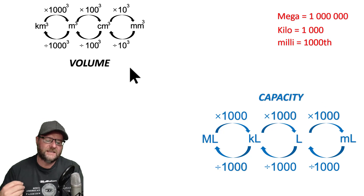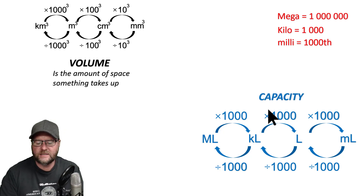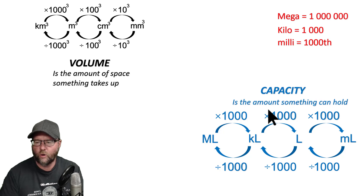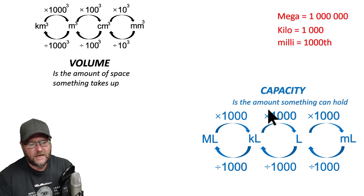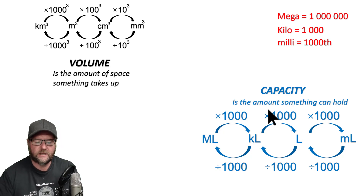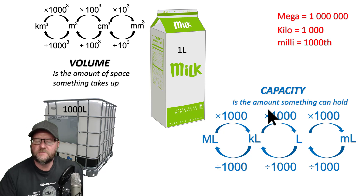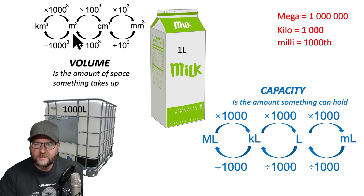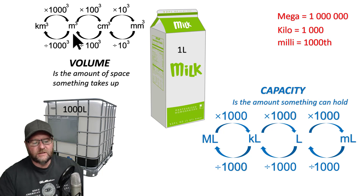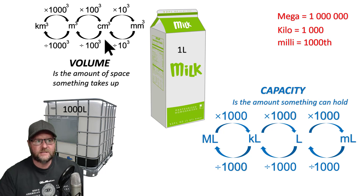Volume is the amount of space that something takes up. Capacity is the amount that something can hold. So when we talk about liquids, like a liter of milk, we say that container has a capacity of one liter. Is there a connection between capacity and volume? In fact, there is. One liter is a thousand cubic centimeters.